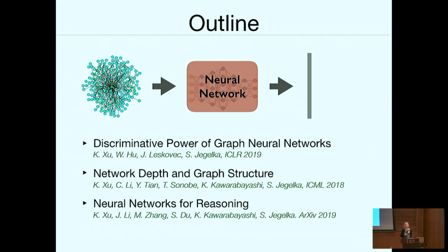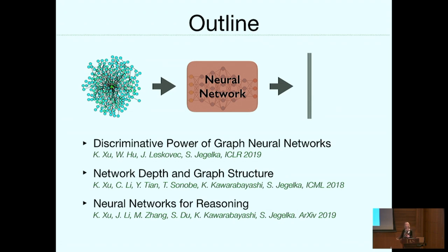The typical standard approach these days is to do this with a neural network. We have our graph — I'm going to call this a graph, not a network, to avoid confusion — and we send this to a neural network. The neural network gives us an embedding of this graph, essentially a vector in R^d. We've been thinking about some properties of these networks and trying to better understand how they behave. The first property we look at is the discriminative power — basically, what graphs can they distinguish? That's a basic requirement for learning functions of a graph. The second thing is interactions between the types of input and the networks. If I get time, I'll also talk about applying graph neural networks to reasoning tasks.